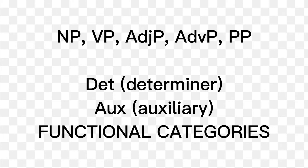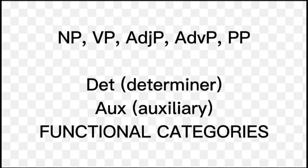As mentioned earlier, some of these are traditionally referred to as parts of speech. Other categories may be less familiar. For example, the category determiner (Det) includes the articles 'a' and 'the', as well as demonstratives such as this, that, and those, and counting words such as 'each' and 'every'. Another less familiar category is auxiliary, which includes the verbs have, had, be, was, were, and the modals may, might, can, could, must, shall, should, will, and would.